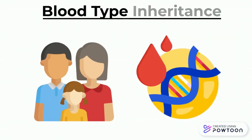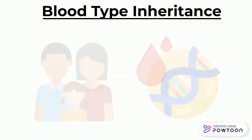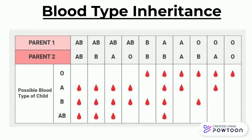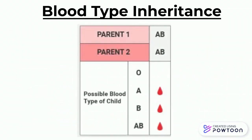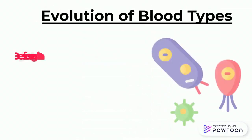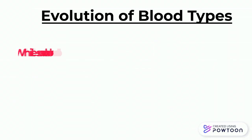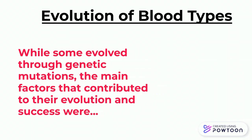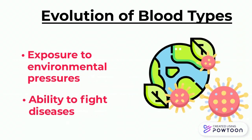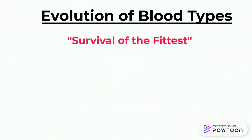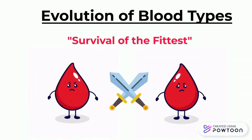Much like eye or hair color, blood types are inherited genetically from your parents. It is believed that different antigens found in blood types have evolved to respond to the exposure of different types of pathogens, like viruses and bacteria. Although some blood types and their antigens developed through genetic mutations, the main factors that contributed to their evolutionary success were likely exposure to environmental pressures such as the ability to fight disease. Some blood types survived infections and outlived their rivals — in a way, it was the survival of the fittest blood.